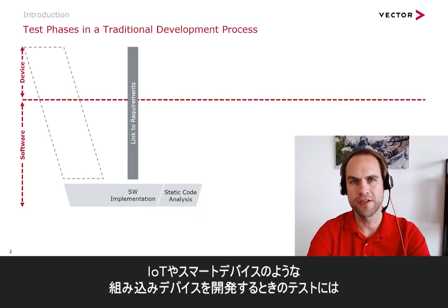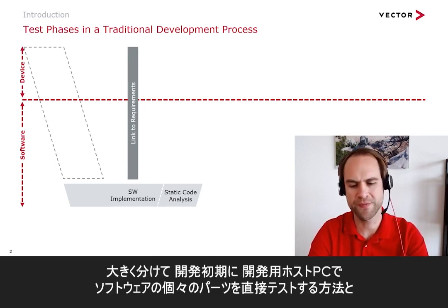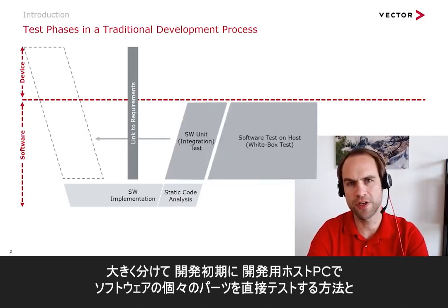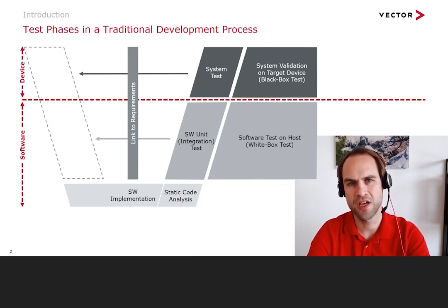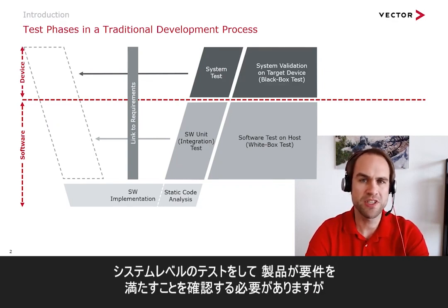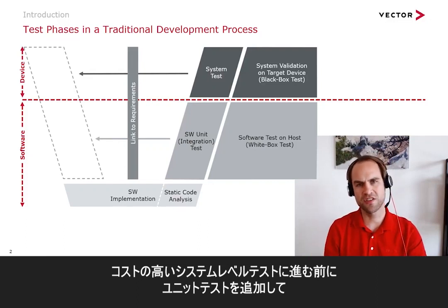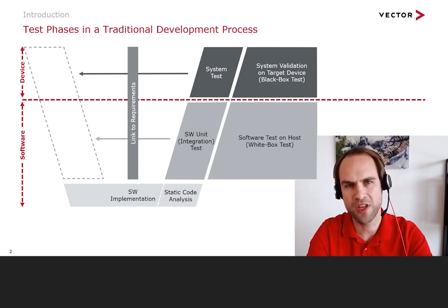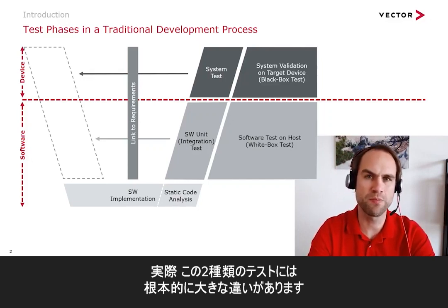When you're developing an embedded device, for example an IoT or a smart device, you have pretty much two choices for your tests. You can test individual parts of your software early and directly on the host PC that you're developing on, and you can test the final integrated system directly running on the target device. In practice you will need both — system level tests to make sure your product meets its requirements, and unit tests to make sure you've tested crucial parts before moving to the fairly costly system level tests. In practice there's a fundamental gap between those two types of tests.